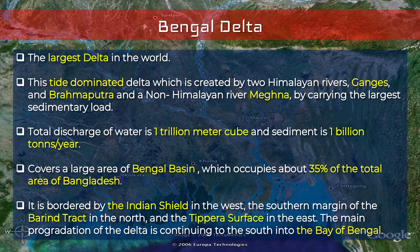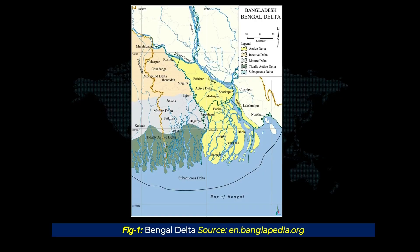It is bounded by the Indian Shield in the west, the Barind Tract in the north, and the Tripura Surface in the east. The main progression of the delta is continuing to the south into the Bay of Bengal. This map shows the active and inactive parts of the Bengal Delta: the western inactive delta covers about 31,500 square kilometers, and the eastern active delta covers 15,000 square kilometers, prograding towards the south.